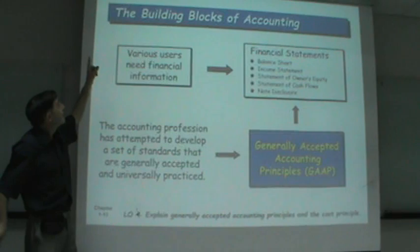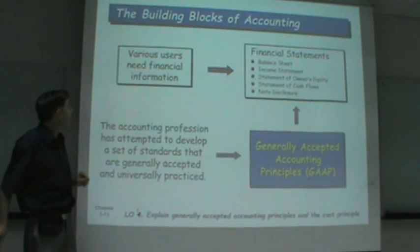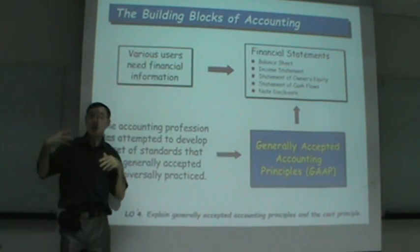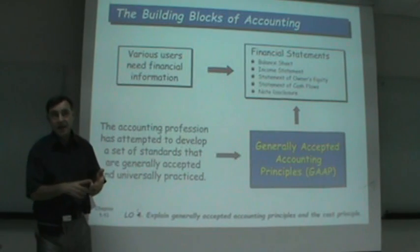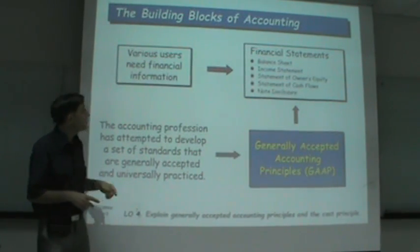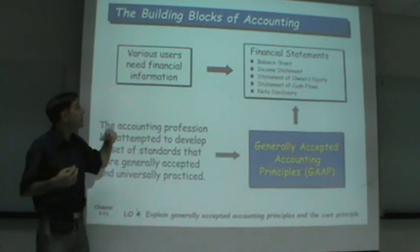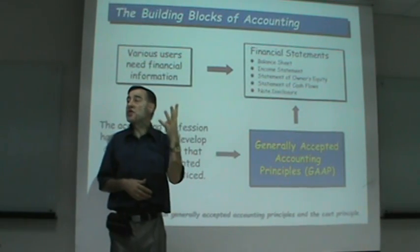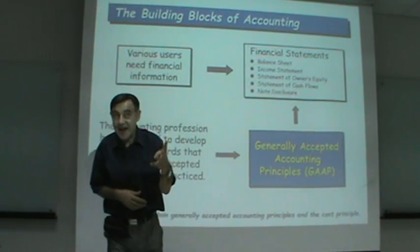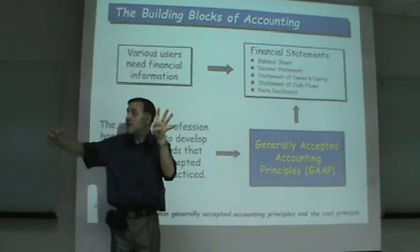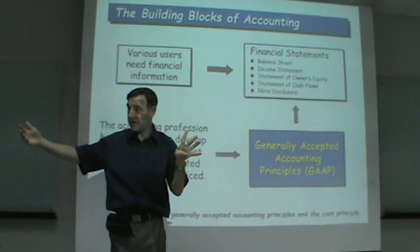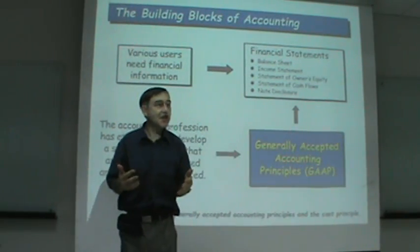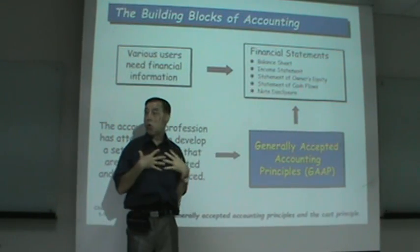Continuing with the building blocks of accounting: users — internal and external, finance, accounting, marketing, government — all need and use accounting and financial statements. There are four financial statements we will discuss. The first is the balance sheet, which tells you everything that you own, called assets, and everything you owe to others, called liabilities. I'll explain more about that shortly.